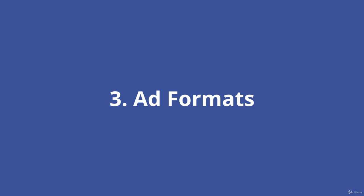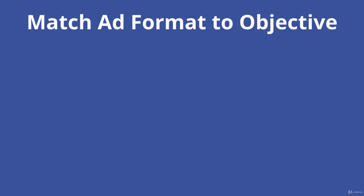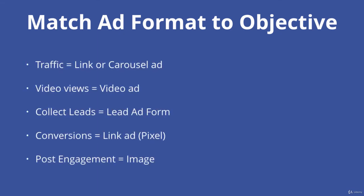Moving on to the third key to success with Facebook ads: ad formats. The key thing here is that you really want to match your ad format to the objective. There are a lot of different formats — you can use videos, images, or carousel ads. Some basic rules: if you want to get traffic to your website, use an image, a link click ad, or a carousel ad. For video views, obviously use a video. To collect leads, use a lead ad and lead ad forms. For conversions and sales, a direct link is better than a video because people will click and go directly there instead of staying on Facebook.